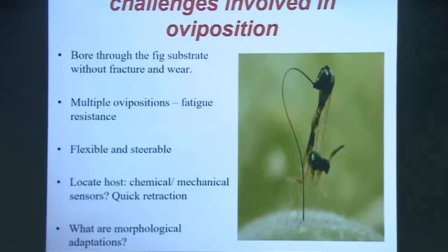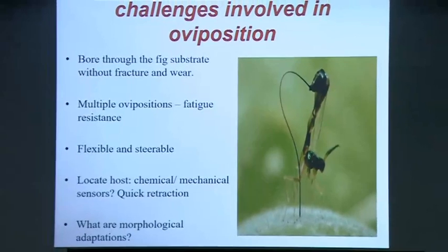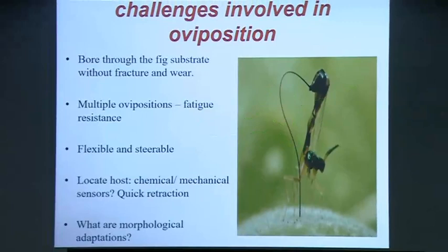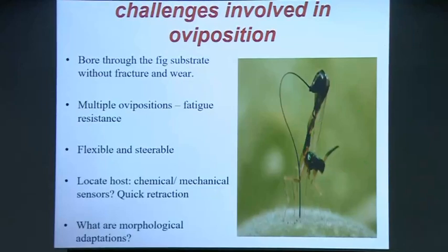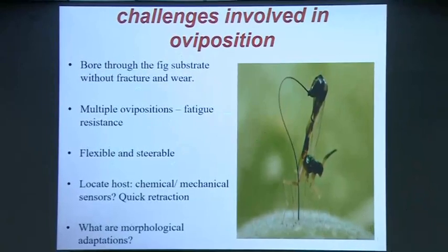The things we looked at were the challenges that this parasitoid faces as she tries to oviposit. One idea is that she has to bore through the substrate several times. From a mechanics perspective, you want a tool which will not undergo any fracture. It cannot wear out, because unlike us who make just a few babies, these insects are inserting many more of their own brood. So it cannot undergo wear, because this process should happen several times during her lifetime. It also has to be fatigue resistant — she has to do this job many, many times.